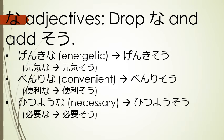That covers i-adjectives. Na-adjectives are just as simple — you just drop 'na' from the end and add 'sou.' So 'genki' or 'genki na,' meaning energetic, becomes 'genki sou.' 'Benri' or 'benri na,' meaning convenient, becomes 'benri sou.' And 'hitsuyou' or 'hitsuyou na,' meaning necessary, becomes 'hitsuyou sou.'